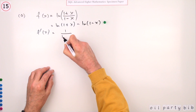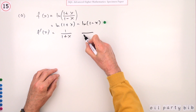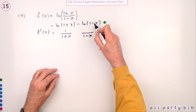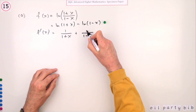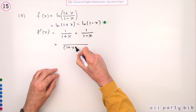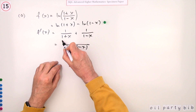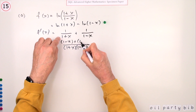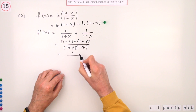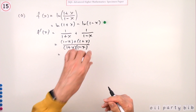The derivative of ln(1+x) is 1/(1+x), multiplied by its derivative which is just 1. For ln(1-x), it's 1/(1-x) but multiplied by the derivative of (1-x) which is −1, turning that into a plus. Expressing as a single fraction over (1+x)(1−x): the top gives 1−x + 1+x, so the x's disappear leaving 2, and the bottom is the difference of two squares: 1−x². That's the second mark.